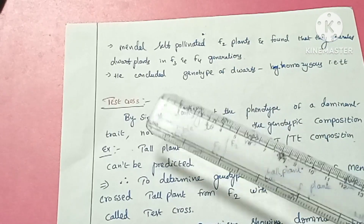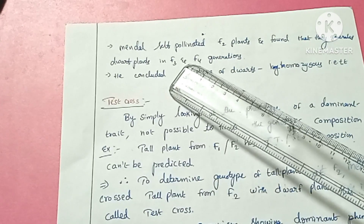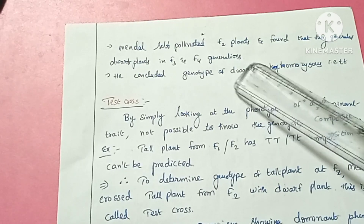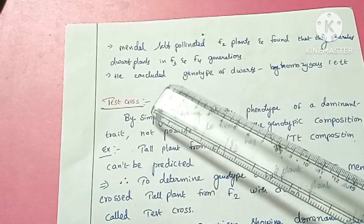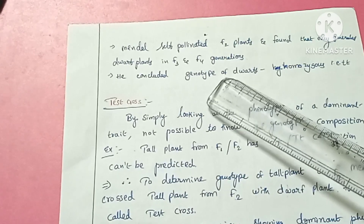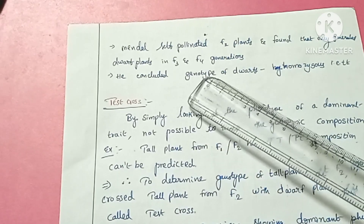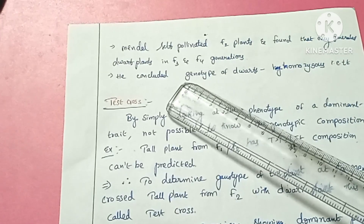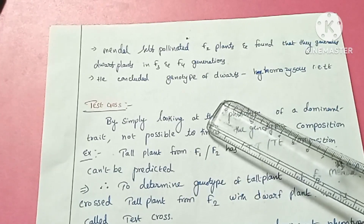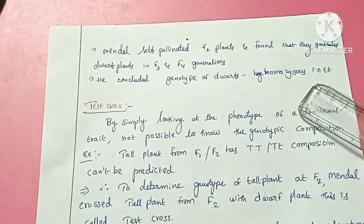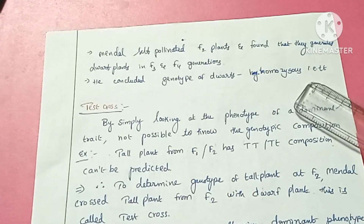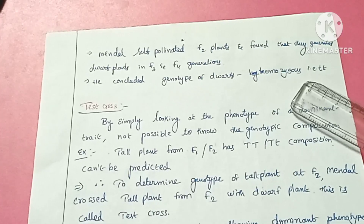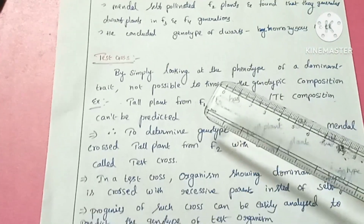After F2 generation, Mendel self-pollinated the F2 plants. He found that they generated dwarf plants in F3 and F4 generations, with no blending — only dwarf plants were produced. He concluded that the genotype of dwarf plants was homozygous, that is small t small t. Using the Punnett square we can find out these genotypes. The next concept is the test cross.